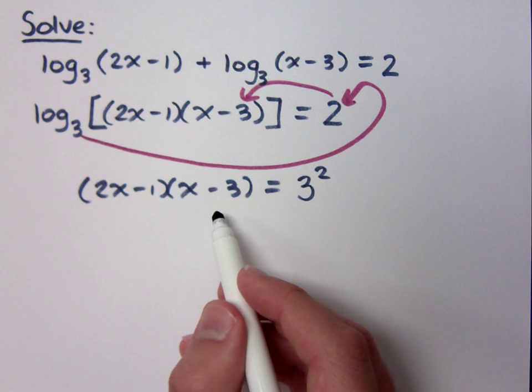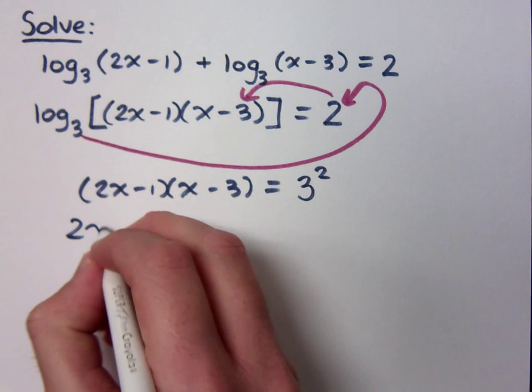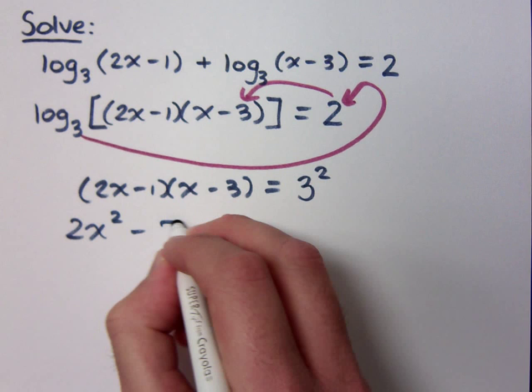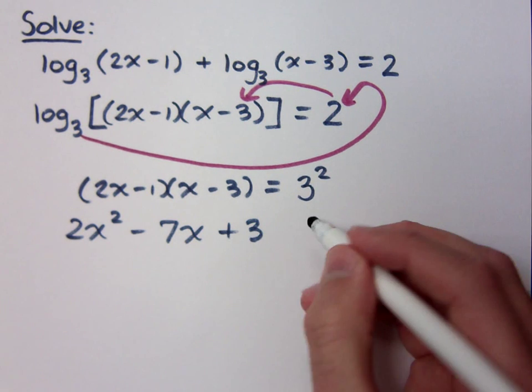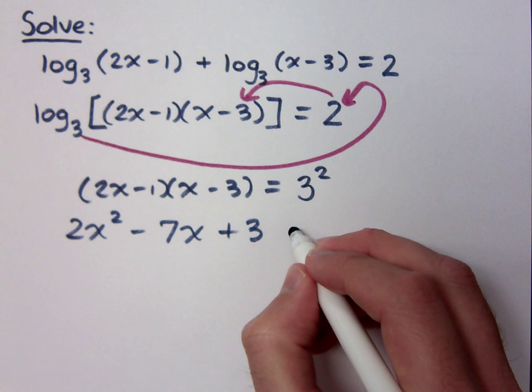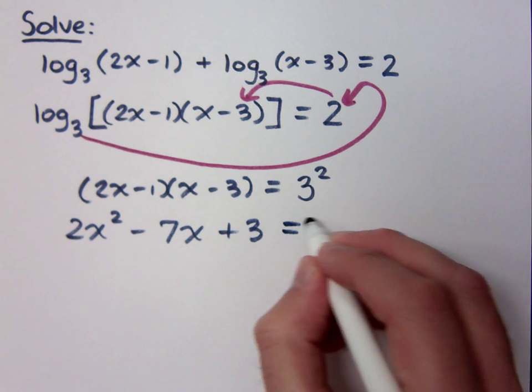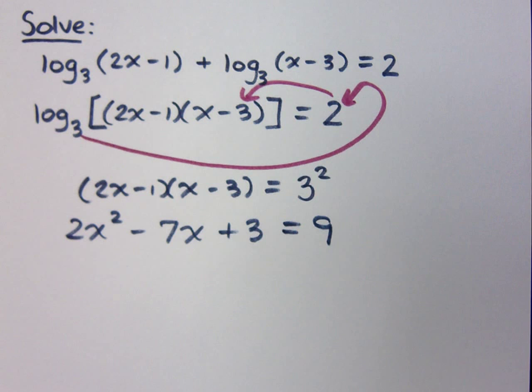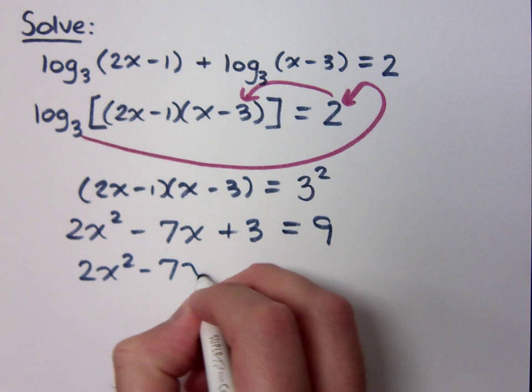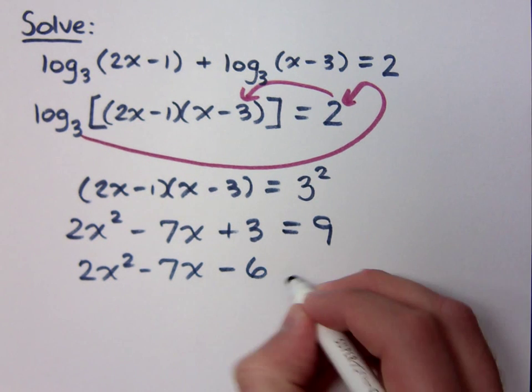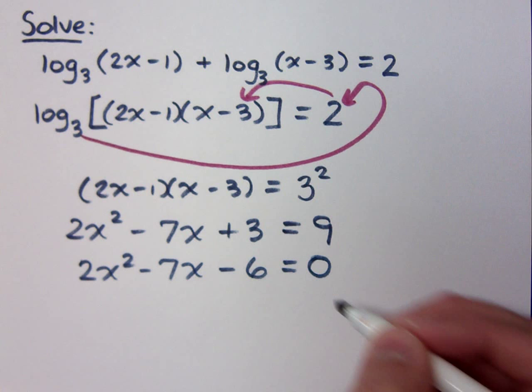So multiply this stuff out. What do you have? 2x squared minus 7x plus 3. What's 3 squared? That's 9. So this is quadratic. That means I have to get everything to one side. So 2x squared minus 7x minus 6 is equal to 0. Do you all agree?